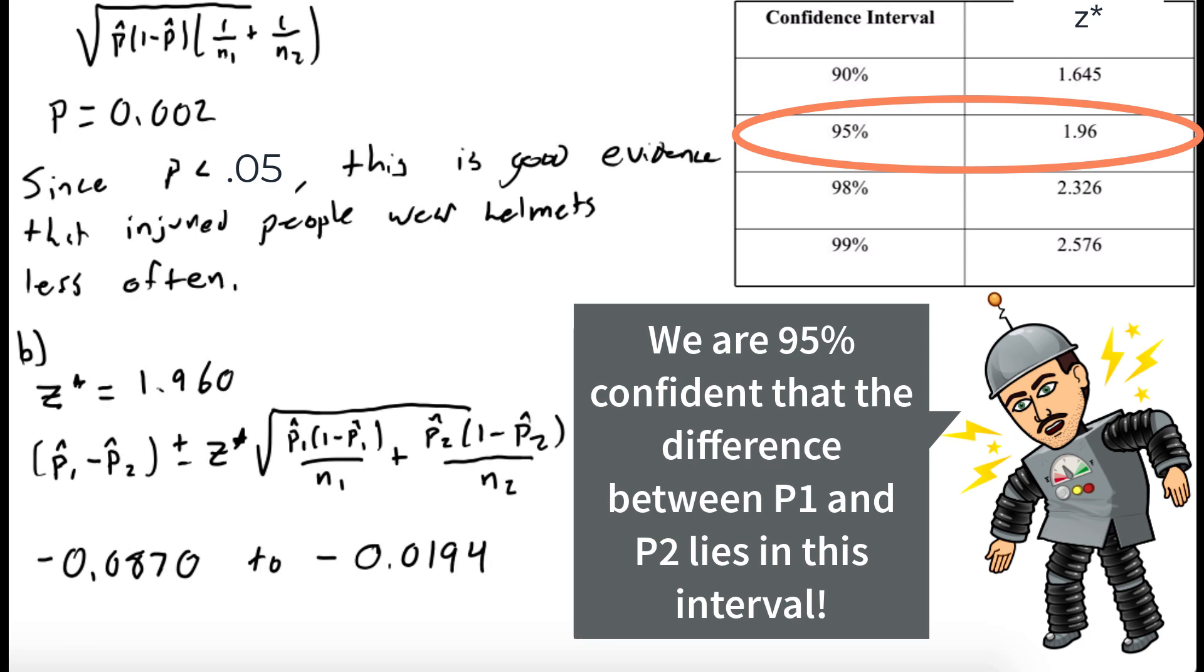What this is saying is we are 95% certain that the proportion of people who wore helmets amongst the injured population is between 0.0194 and 0.0870 less than the proportion of people who wore helmets among the non-injured population.